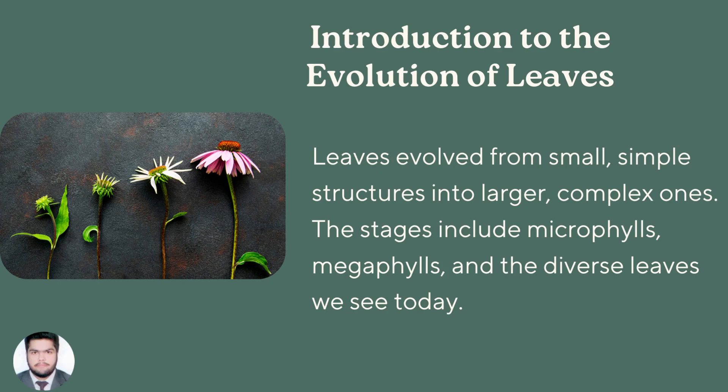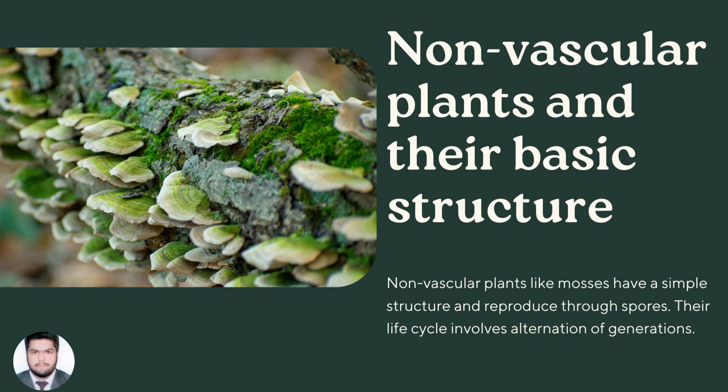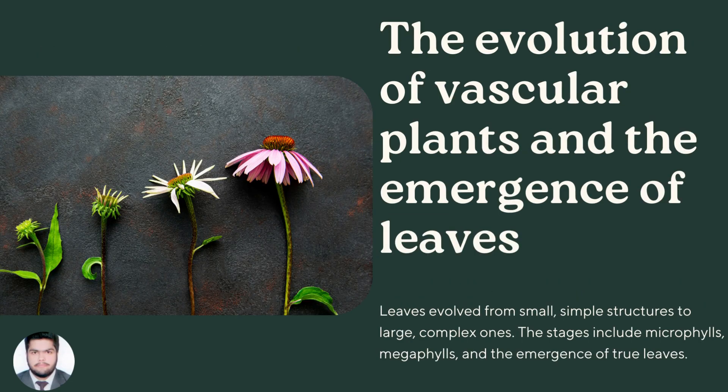Leaves evolved from small simple structures into larger complex ones. These strategies include microphylls, megaphylls, and the diverse leaves we see today. Non-vascular plants like mosses have a simple structure and reproduce through spores, with a life cycle involving alternation of generations.